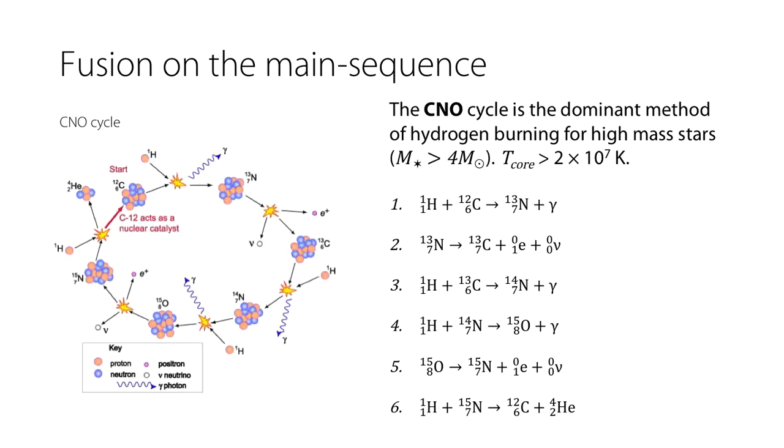Instead, fairly early on, a little bit of carbon-12 is made and then that carbon-12 acts as a nuclear catalyst. In other words, hydrogen interferes with carbon to form an isotope of nitrogen which then decays back to carbon and then carbon-13.